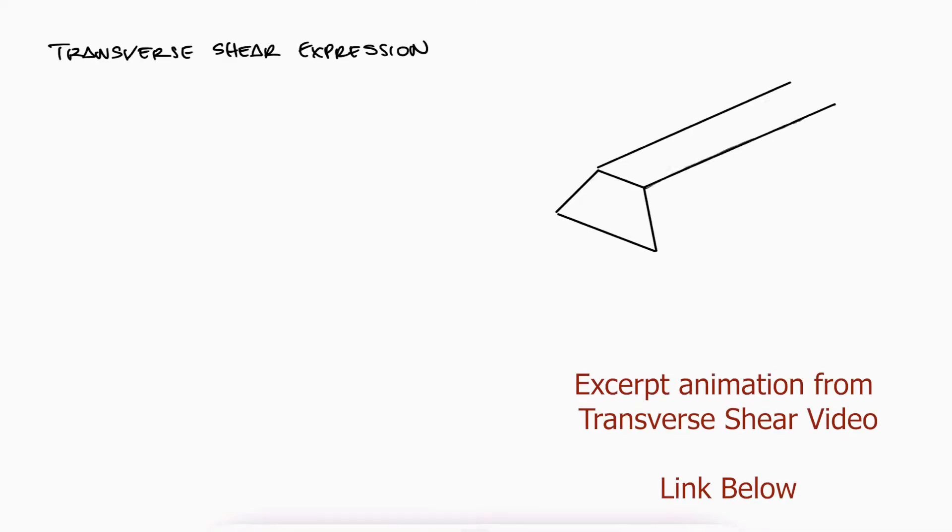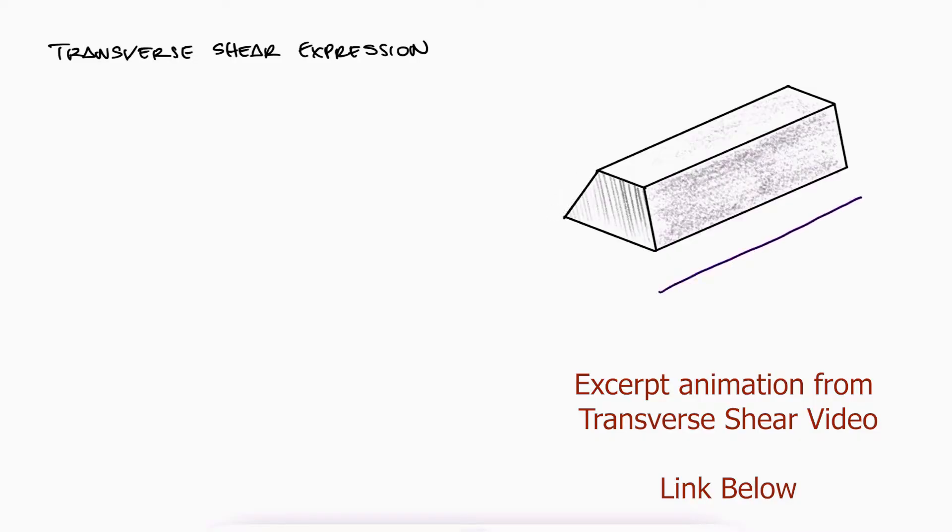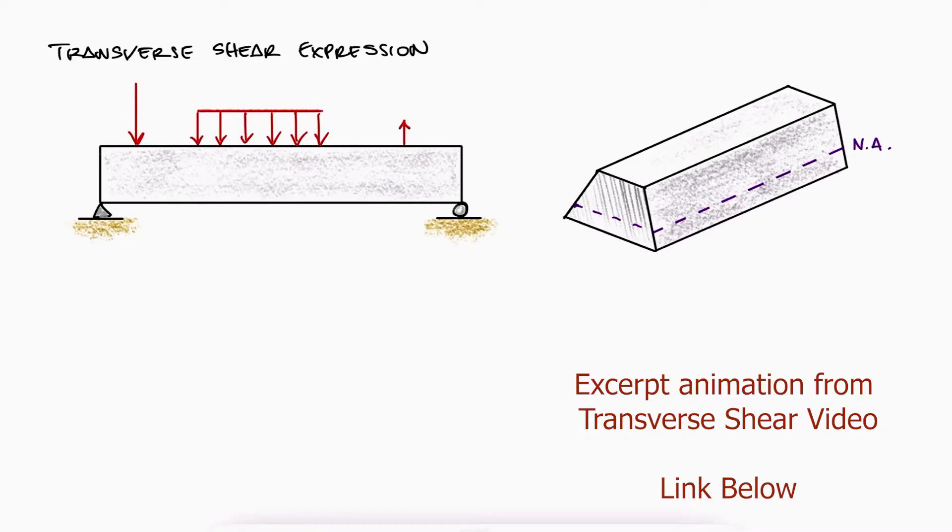Just to quickly recall what we did then in that video, we looked at a beam of constant cross-section area that can have the neutral axis anywhere, not necessarily at the center, and we subjected it to random distributed loads and point loads.